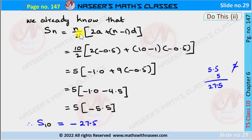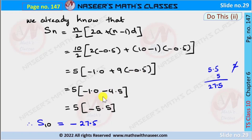Substituting n = 10, a = −0.5, and d = −0.5, we write S₁₀ = 10/2 × (2×(−0.5) + (10−1)×(−0.5)). Here 2×(−0.5) = −1.0, and 10−1 = 9, so 9×(−0.5) = −4.5. Adding −1.0 + (−4.5) = −5.5, then 5 × (−5.5) = −27.5. Therefore the sum of 10 terms is −27.5.